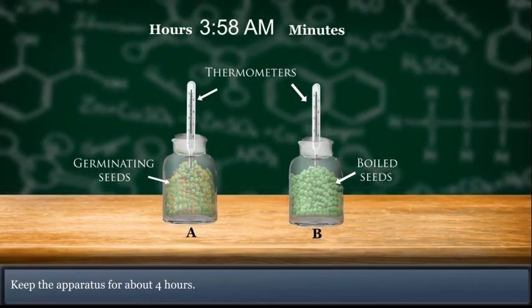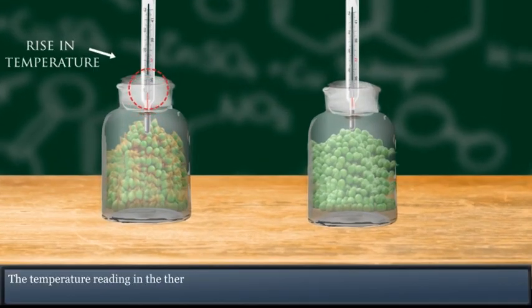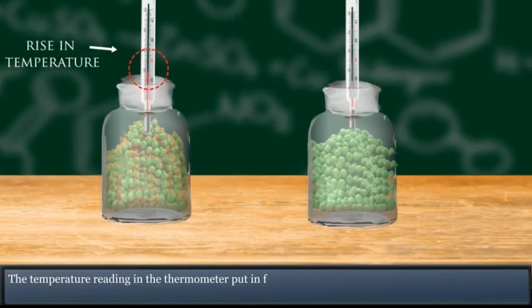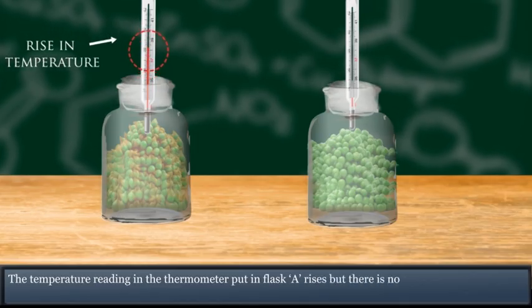The temperature reading in the thermometer in flask A rises, but there is no rise in the temperature reading in the second thermometer, that is flask B.